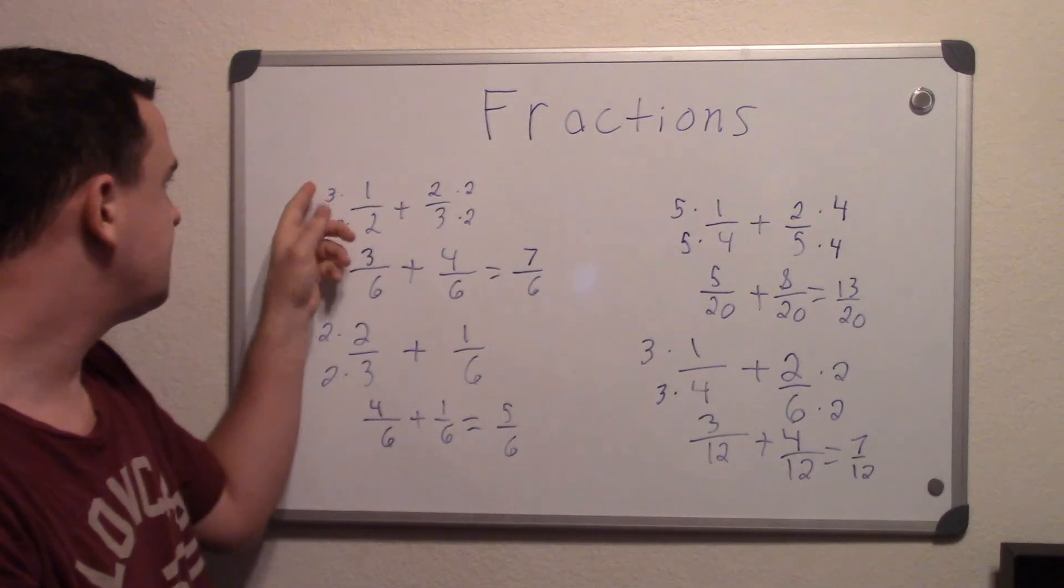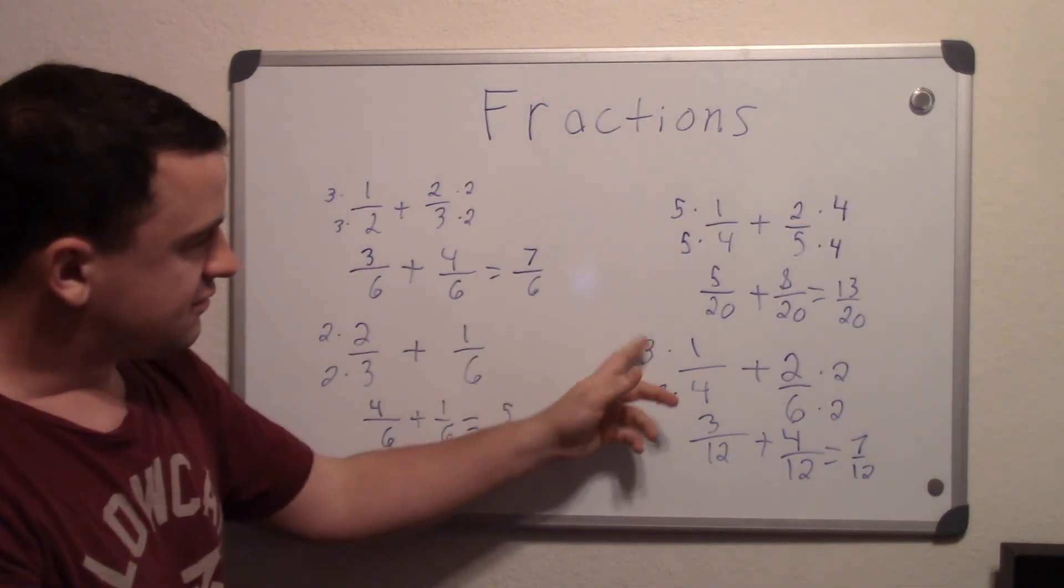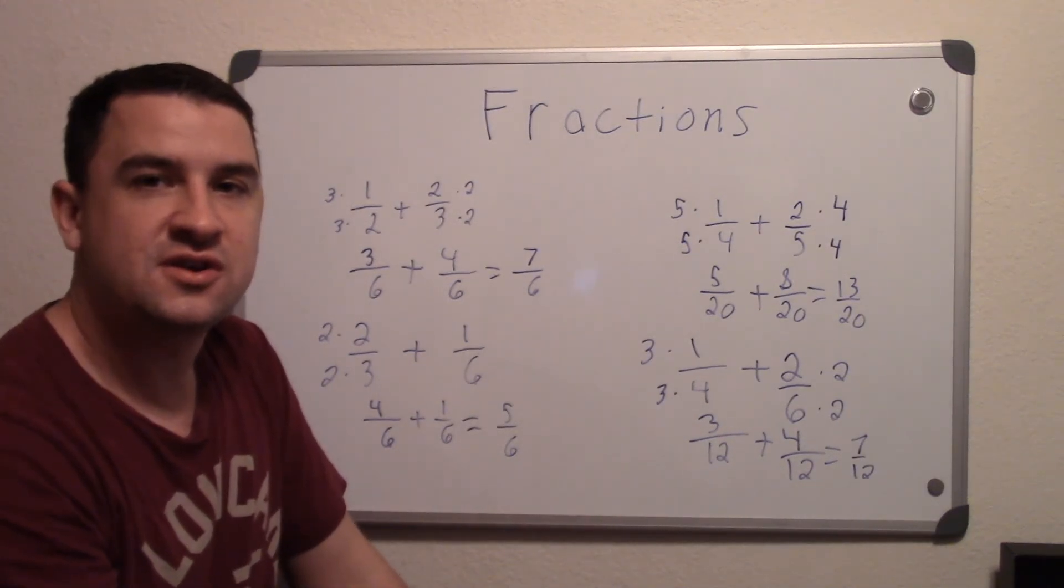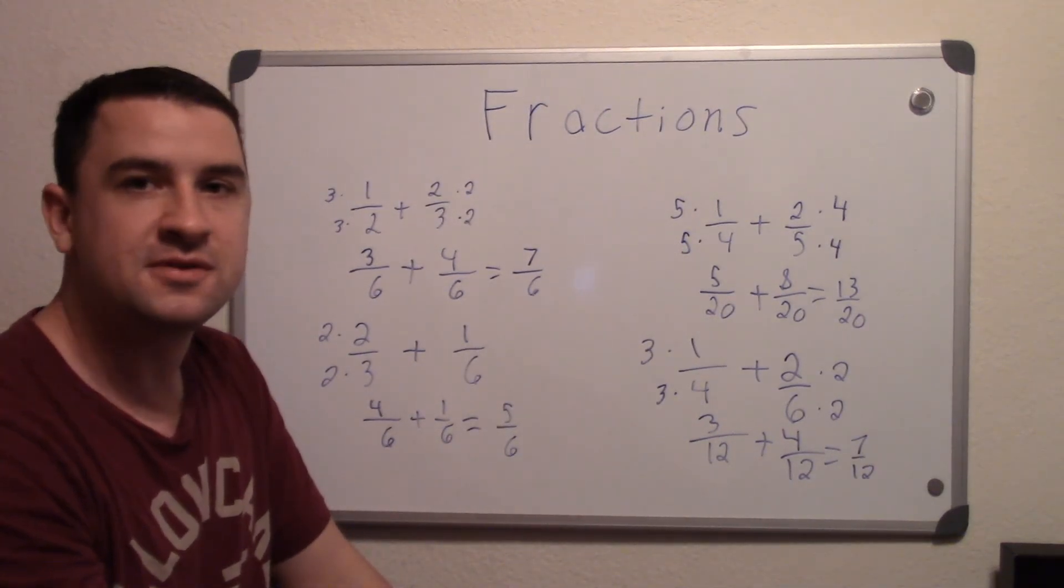2 over 2 is 1, 3 over 3 is 1, 5 over 5, that's all 1. It's just making, it's the same ratio, it's just bigger numbers. Hope that helps, and thanks for watching.